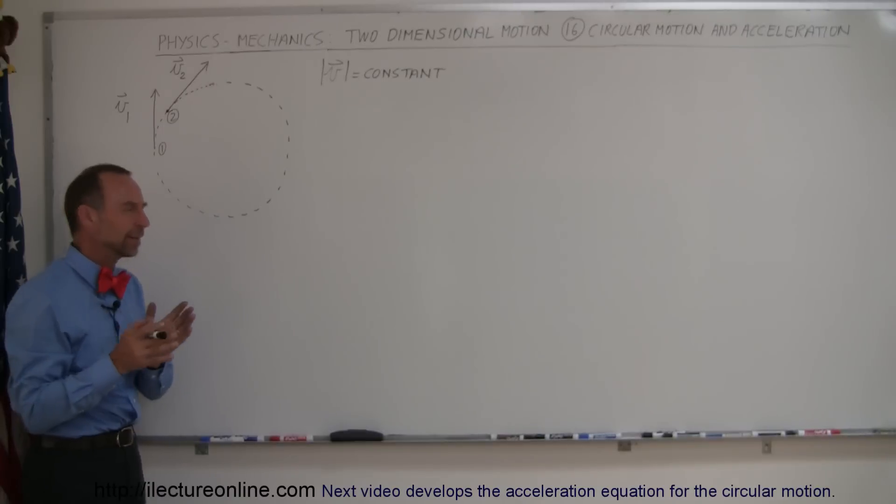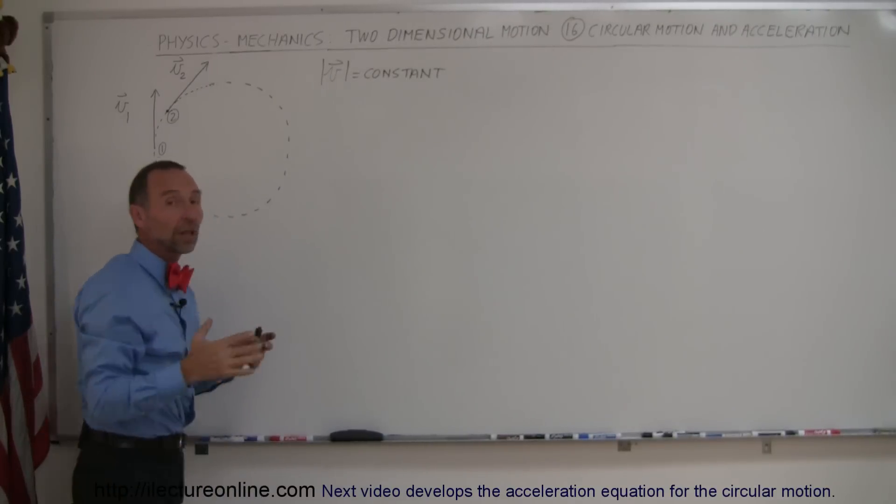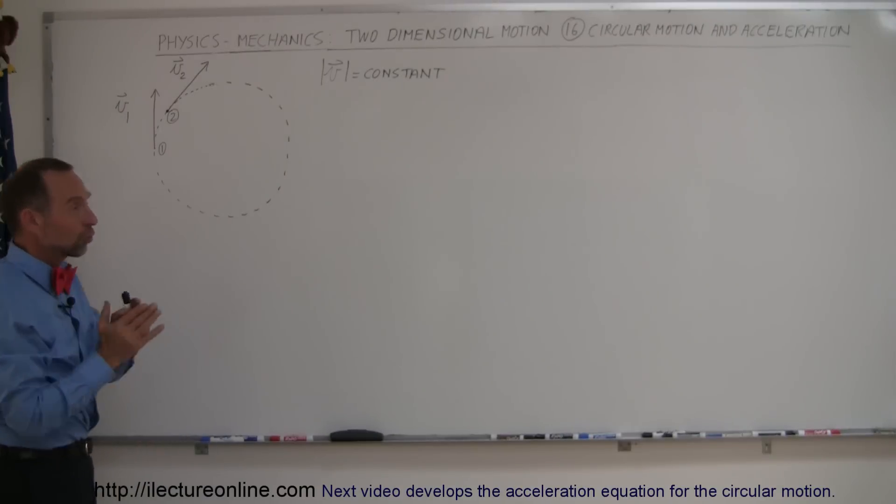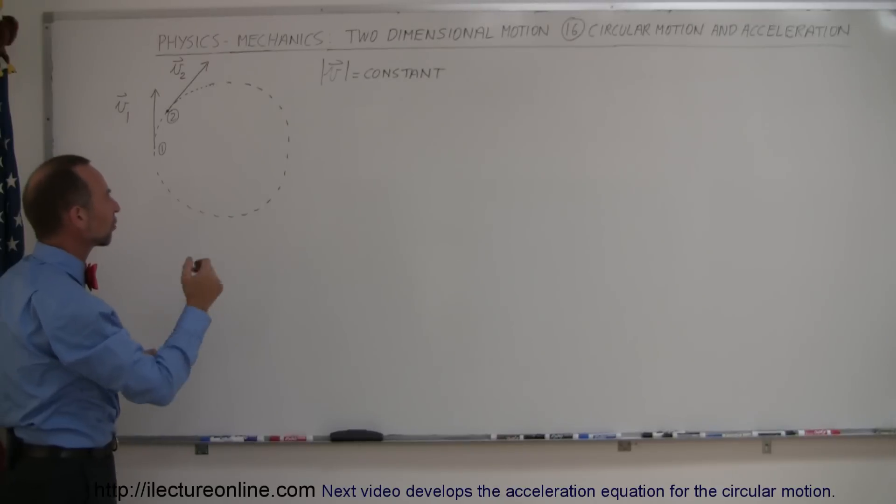Now you may say, well that's kind of strange. Let's say we have an object that has constant speed so the magnitude of velocity doesn't change, just the direction changes. How can there be acceleration if the speed doesn't change, if the object doesn't start going faster or slower?